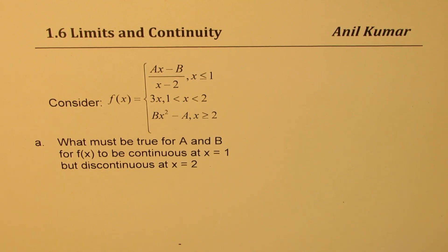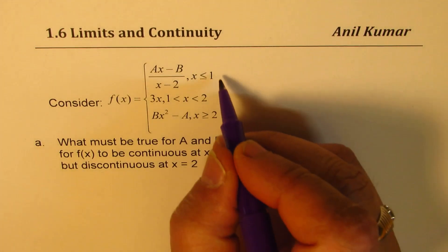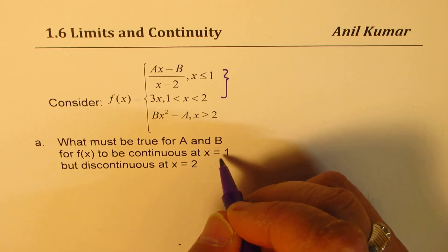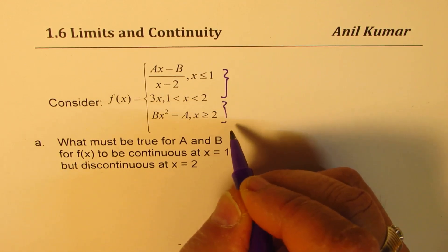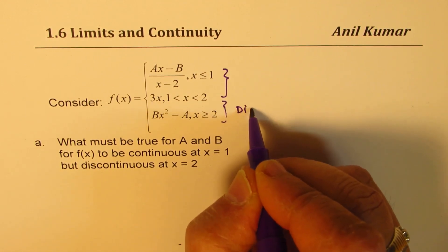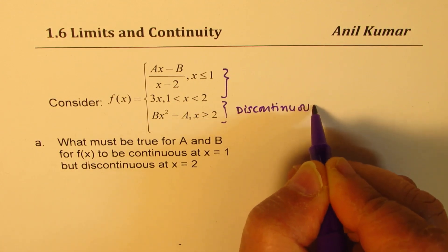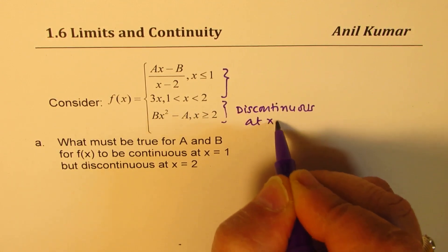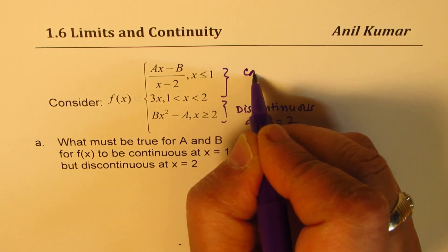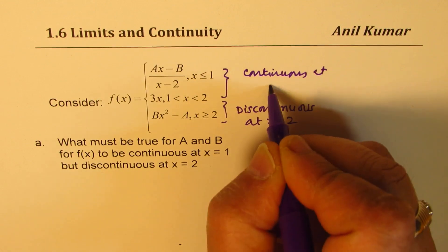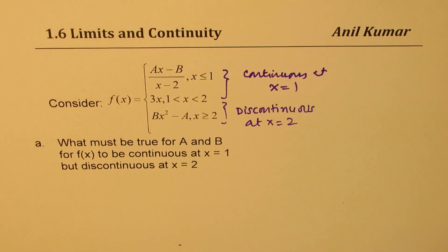So that is the function and we want it to be continuous in one part. We want this part to be continuous, that means at x equals 1, and this part discontinuous. Now when the function has to be continuous at x equals 1,